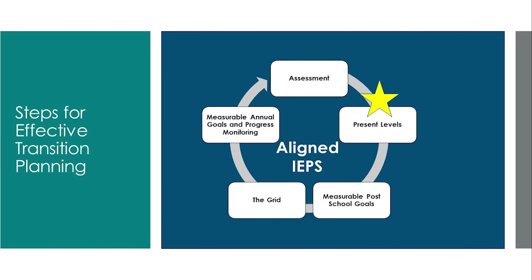The importance of age-appropriate meaningful transition assessments was covered in the last module. In this module, we'll discuss how those assessment results can be interpreted to help pinpoint the present education levels for a student. Present education levels are also known as the present levels of academic achievement and functional performance section of the IEP.